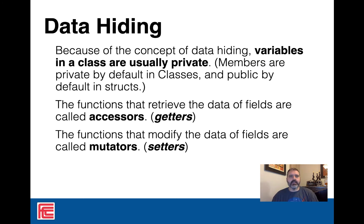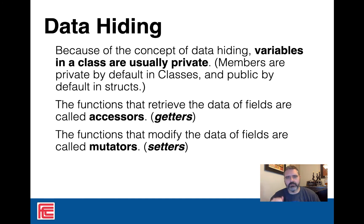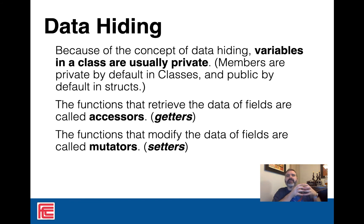Variables in a class are usually private. For classes, members are private by default — if you don't specify that a member is public or private, it's private. And that's actually the difference between classes and structs: in structs, members are public by default; in classes, members are private by default. That's the one difference between the two in modern C++. I always explicitly state what I want, but strictly speaking that's not necessary.